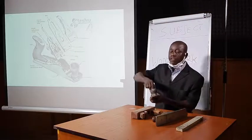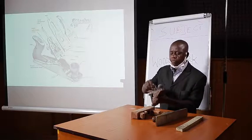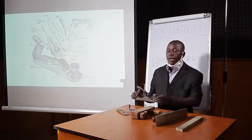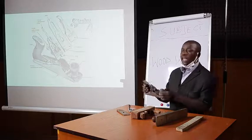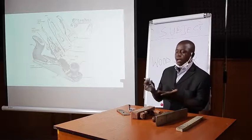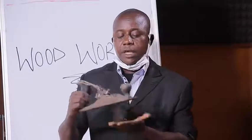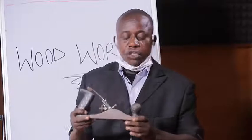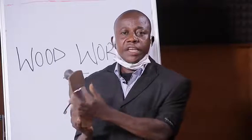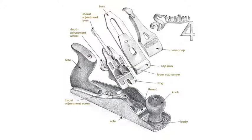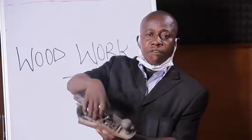I shall be dismounting the plane so that we can identify these parts one after another. This is the plane. What I am holding here is the body, which comprises the sole. This is the body and this is the sole. The body comprises the soul and the mouth, where the chips are being cut and go out. Secondly, we have the frog. This is the frog.